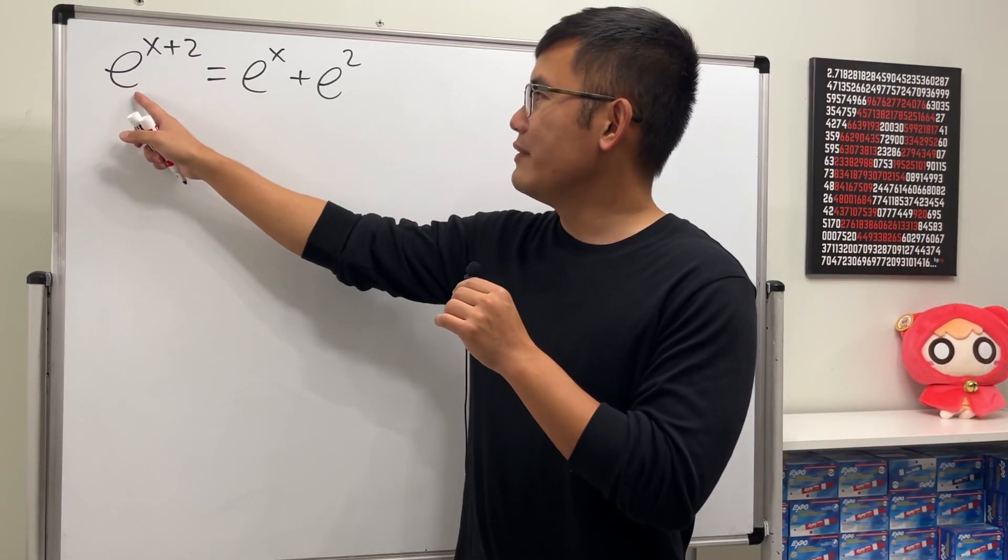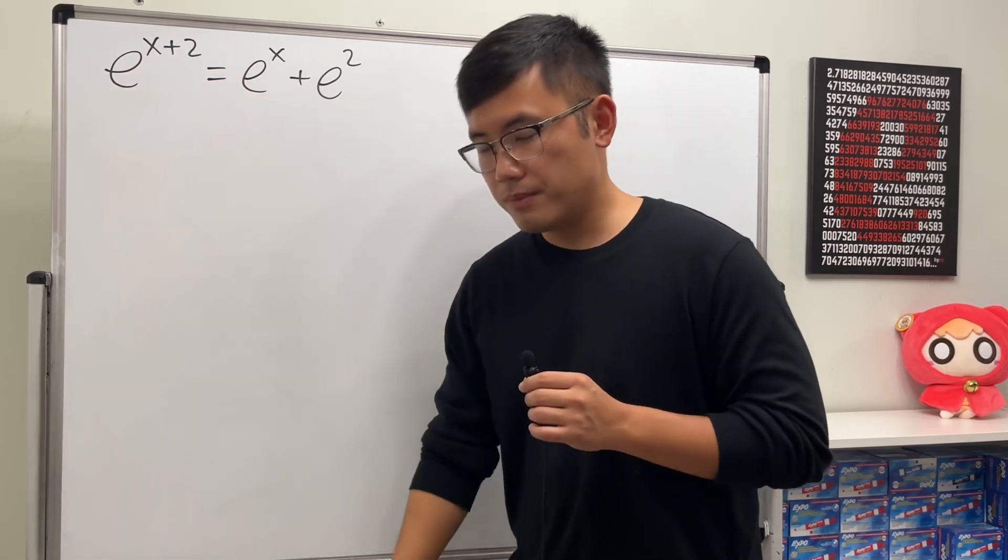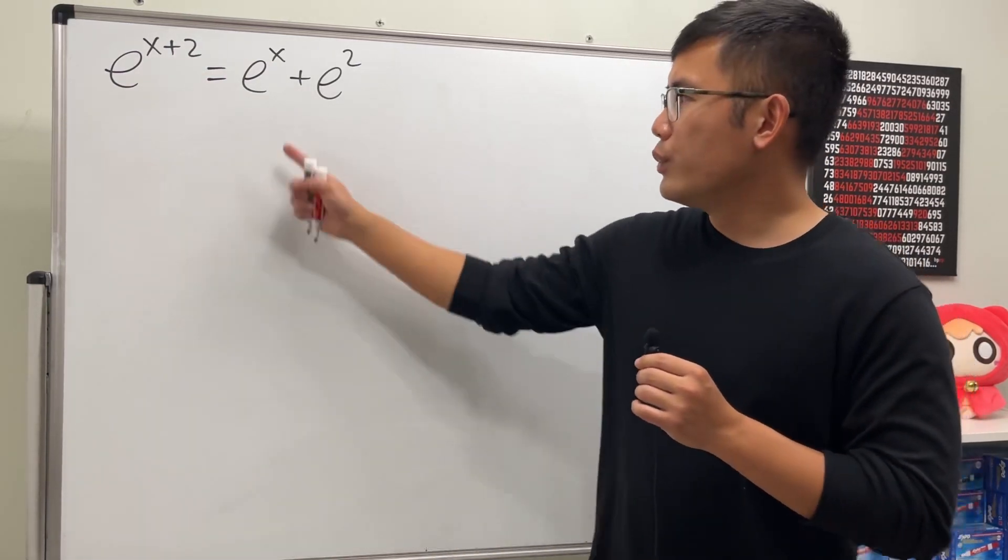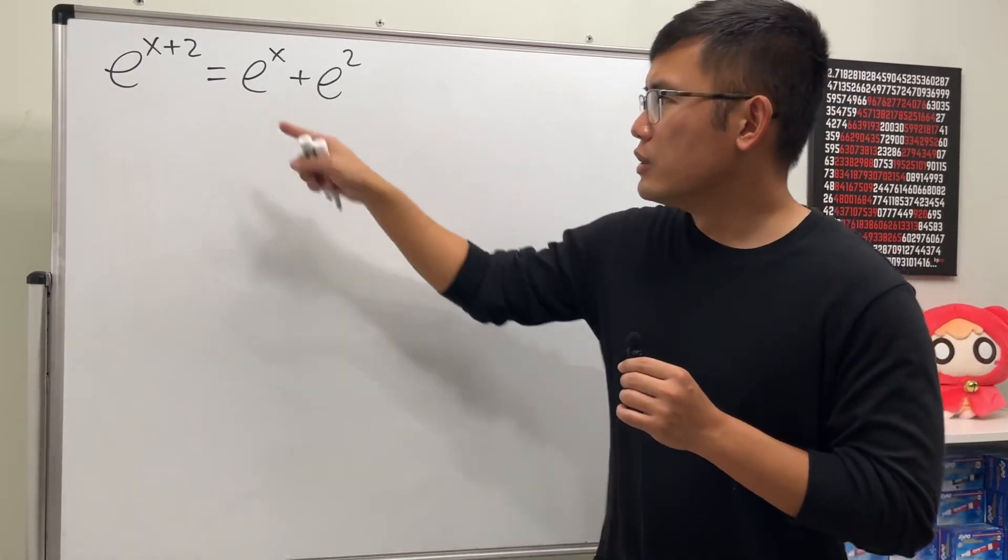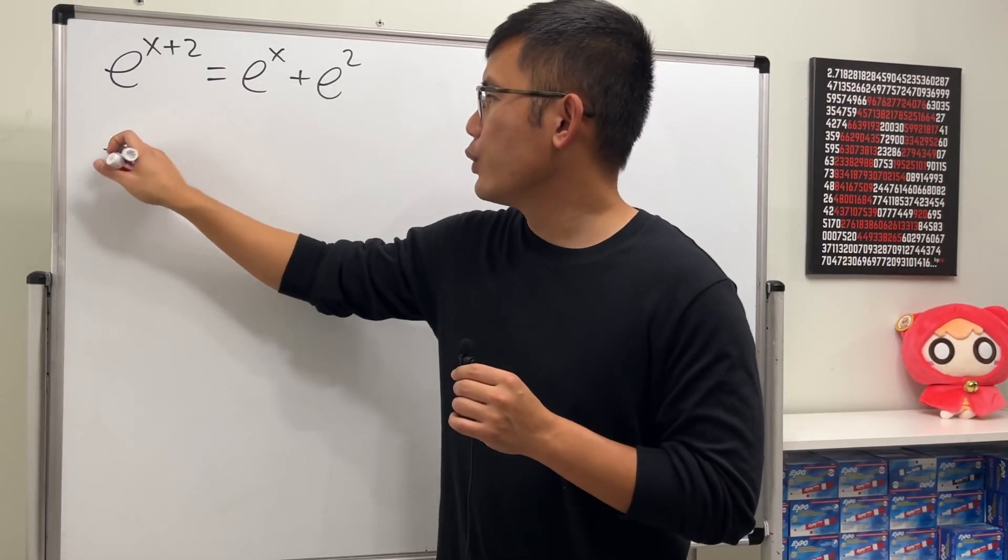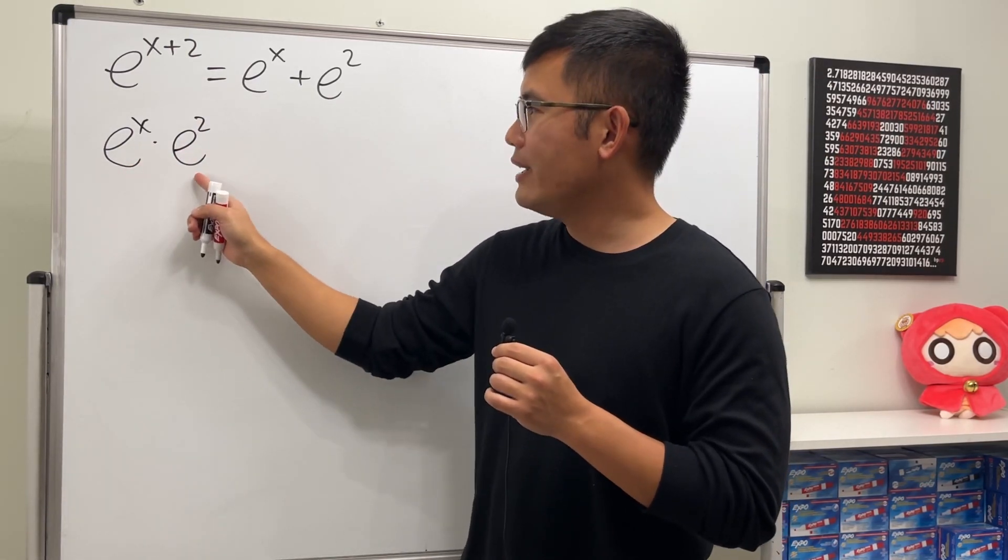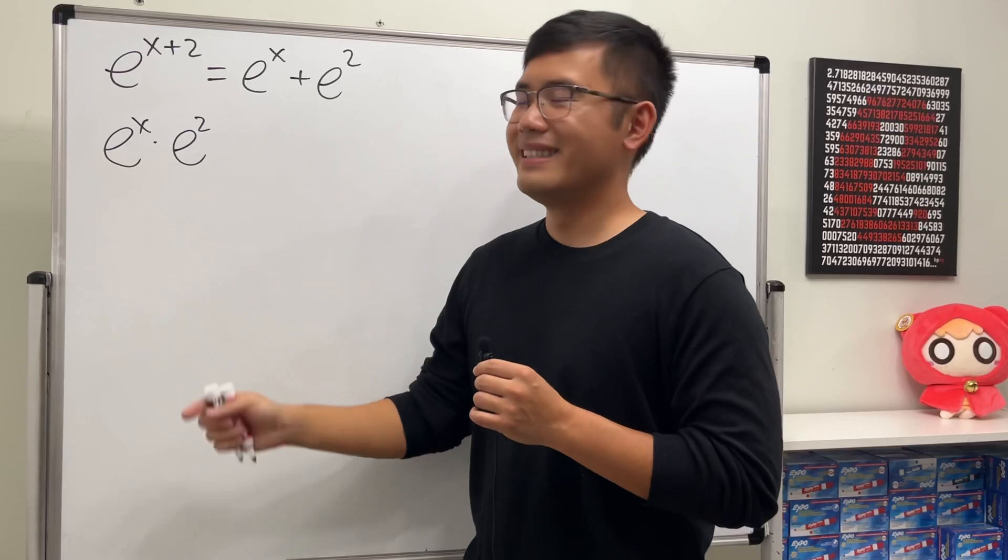On the left-hand side we have e to the x plus 2. Well, we can actually use the rule of exponents to break it apart. We can't really do anything on the right-hand side, so let's do that. We will end up with e to the x times e to the second power. This is the legitimate way to break this apart.